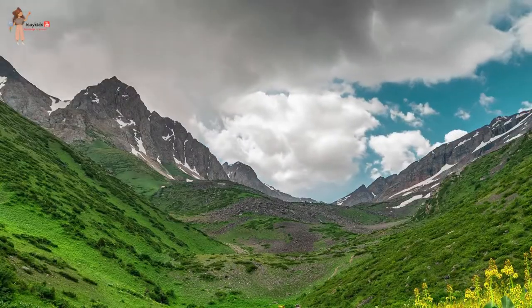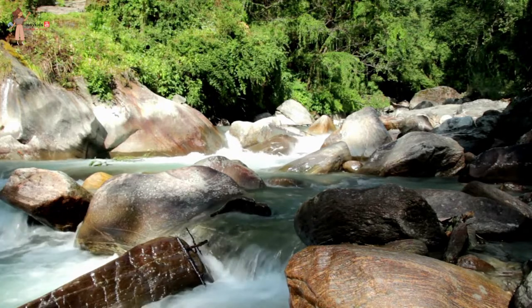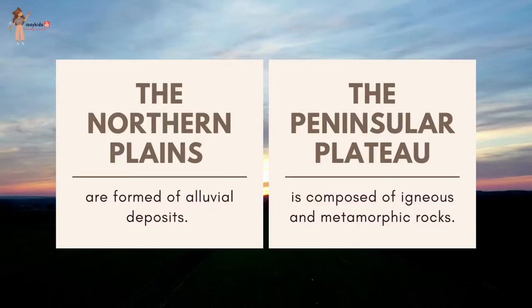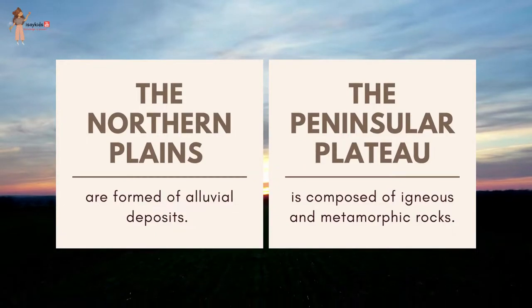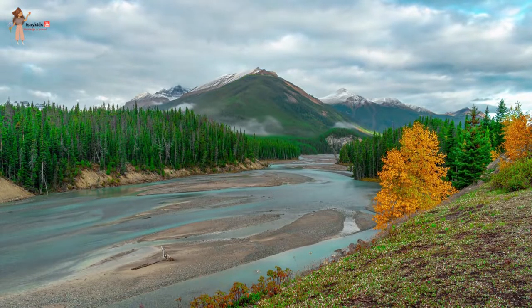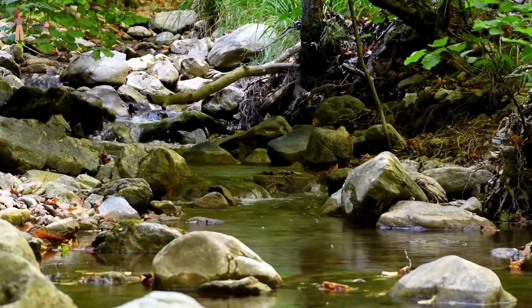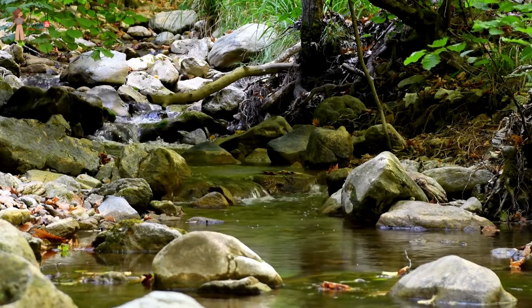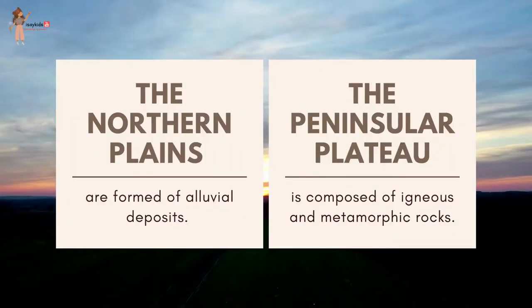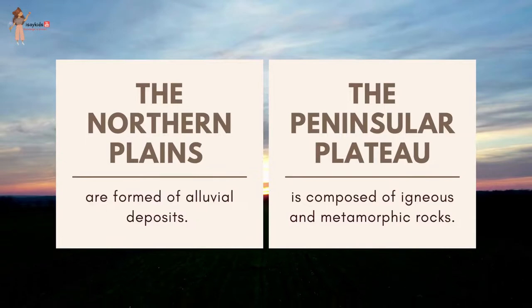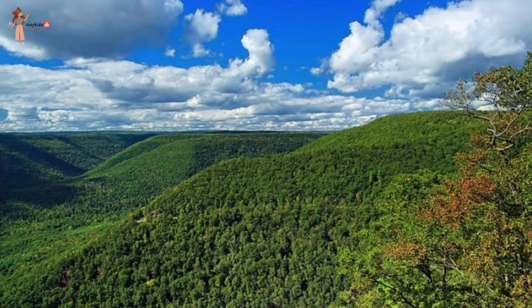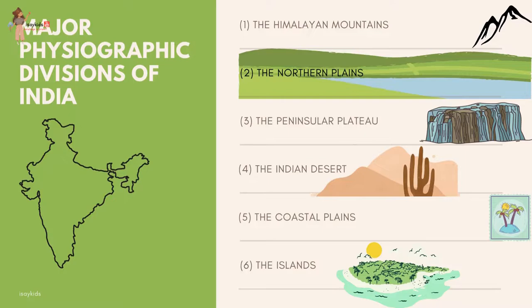The Himalayan mountains form an unstable zone. The whole mountain system of the Himalayas represents a very youthful topography with high peaks, deep valleys and fast-flowing rivers. The northern plains are formed of alluvial deposits — materials deposited by rivers consisting of silt, sand, clay, gravel, and organic matter. The peninsular plateau is composed of igneous and metamorphic rocks with gently rising hills and wide valleys. The major physiographic divisions of India are the Himalayan mountains, the northern plains, the peninsular plateau, the Indian desert, the coastal plains and islands.